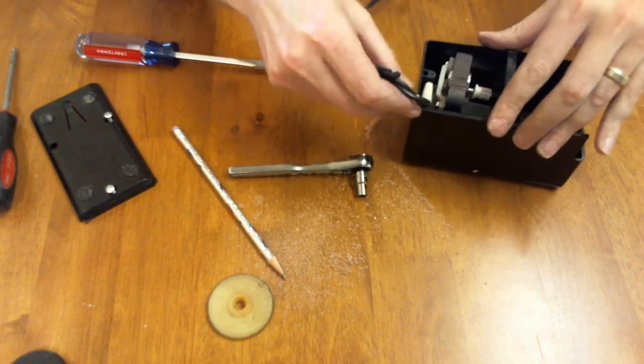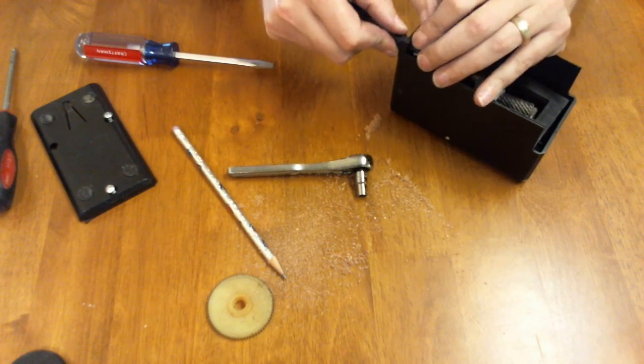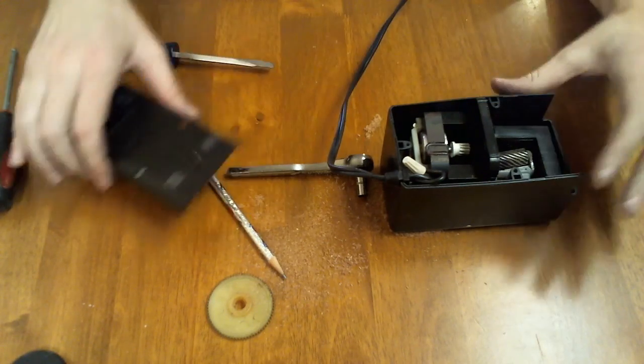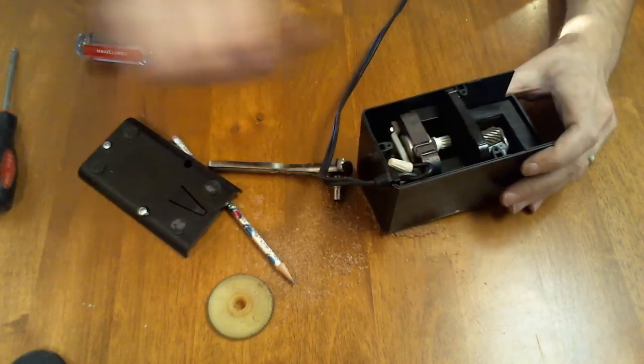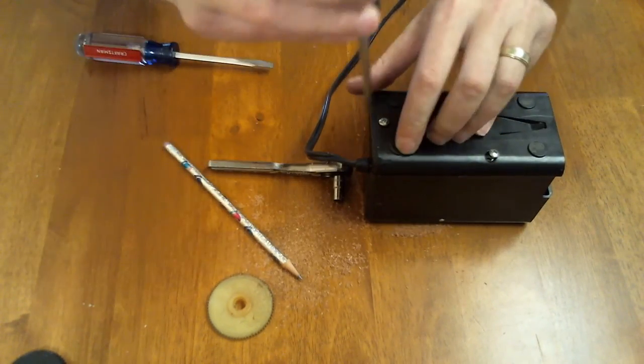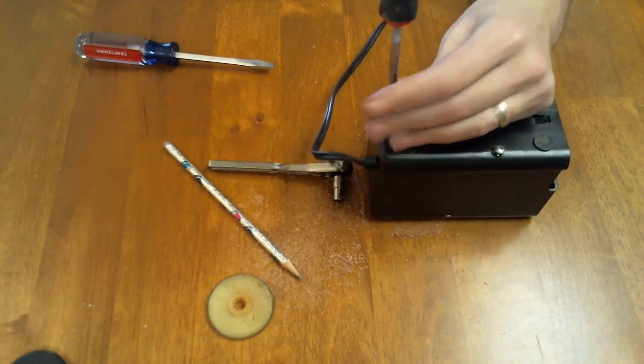Drop it in. Place them off the side. Secure the wire assembly in there as such. Place the cover back on and tighten it down. Once you've done that, you've completed it. You've repaired your Boston 18 pencil sharpener.